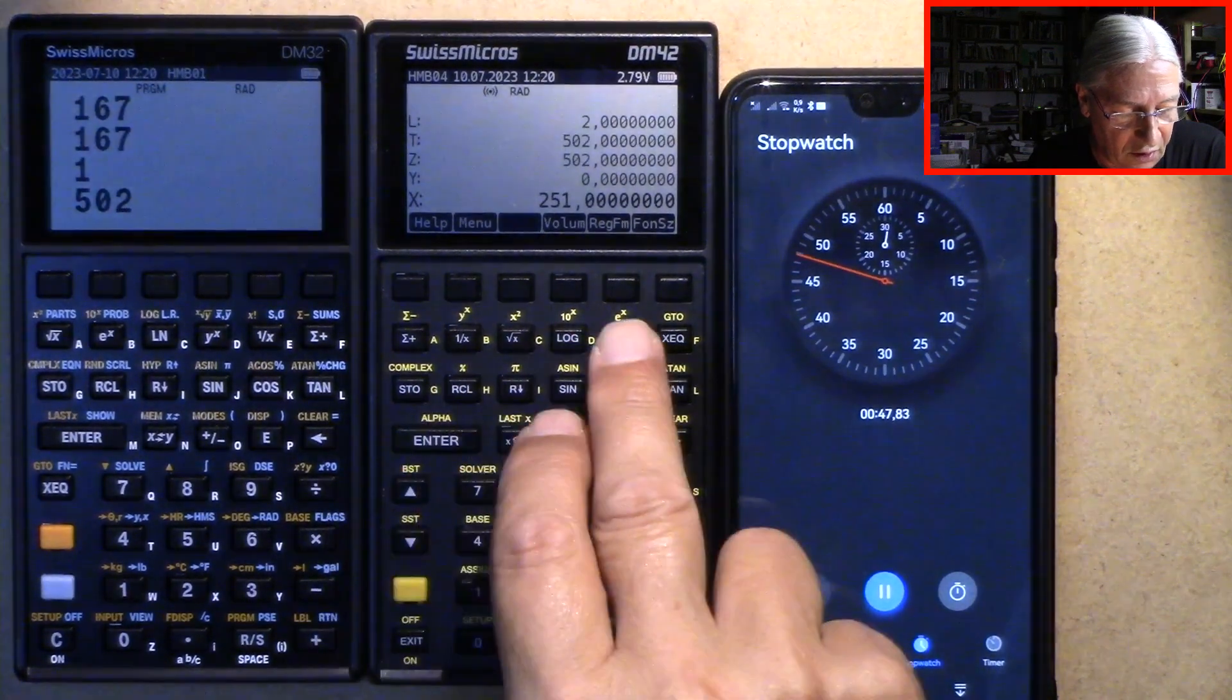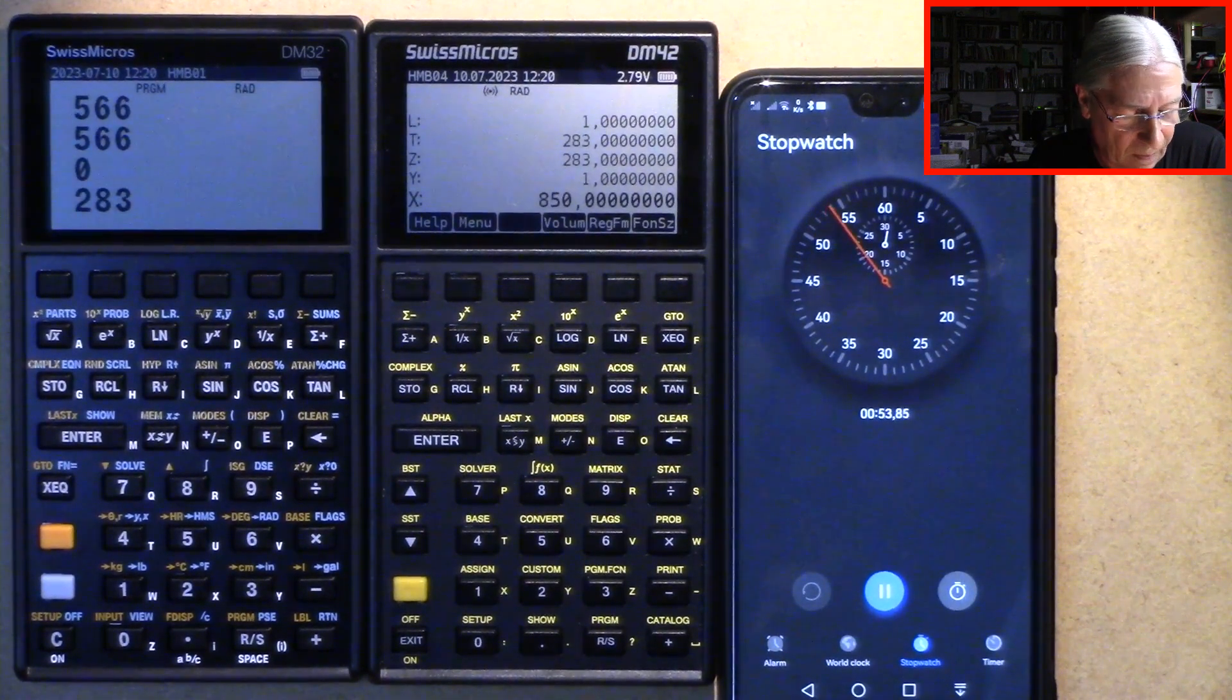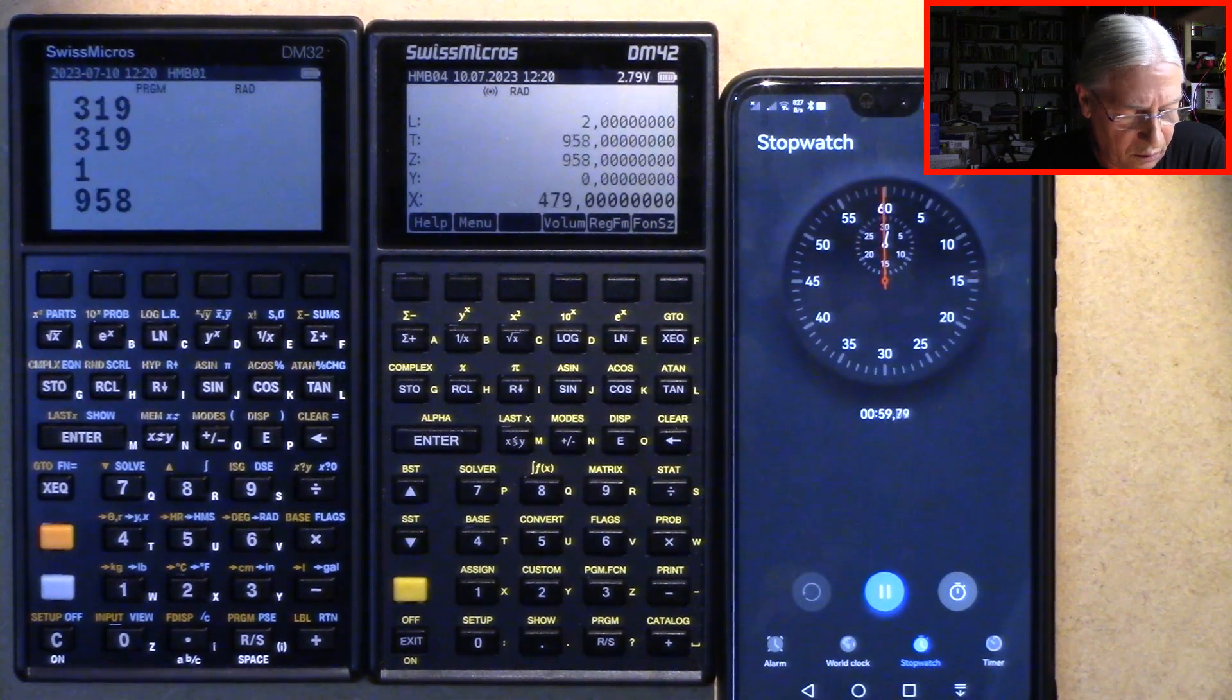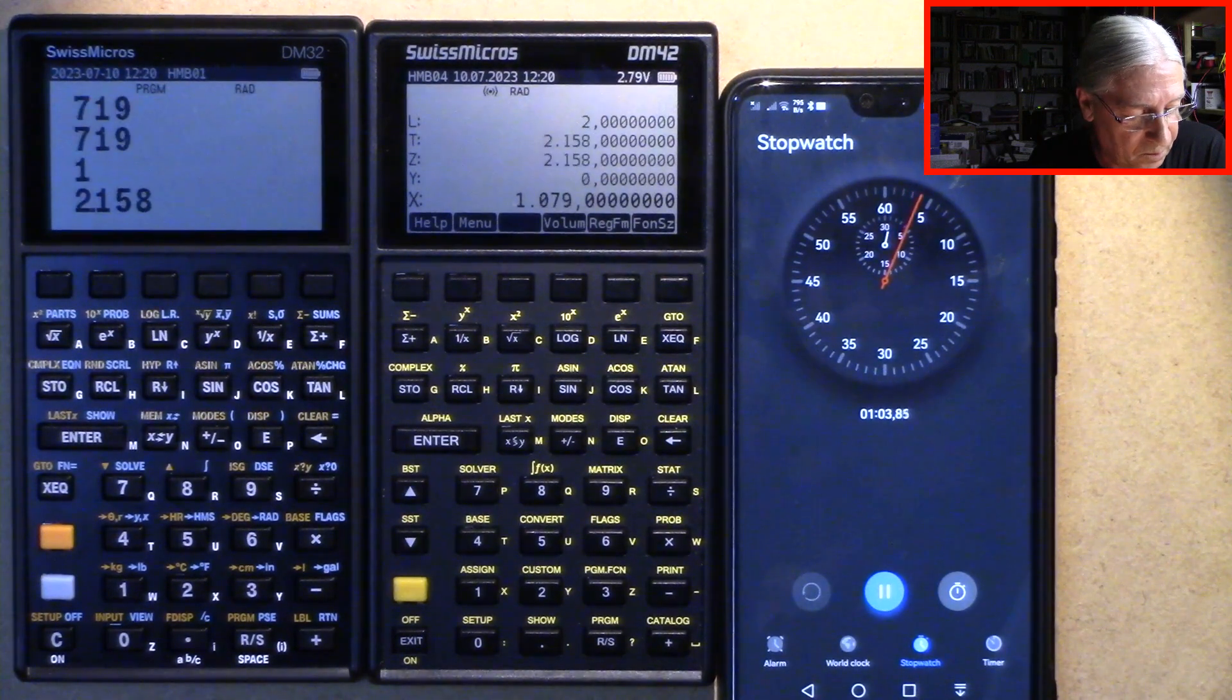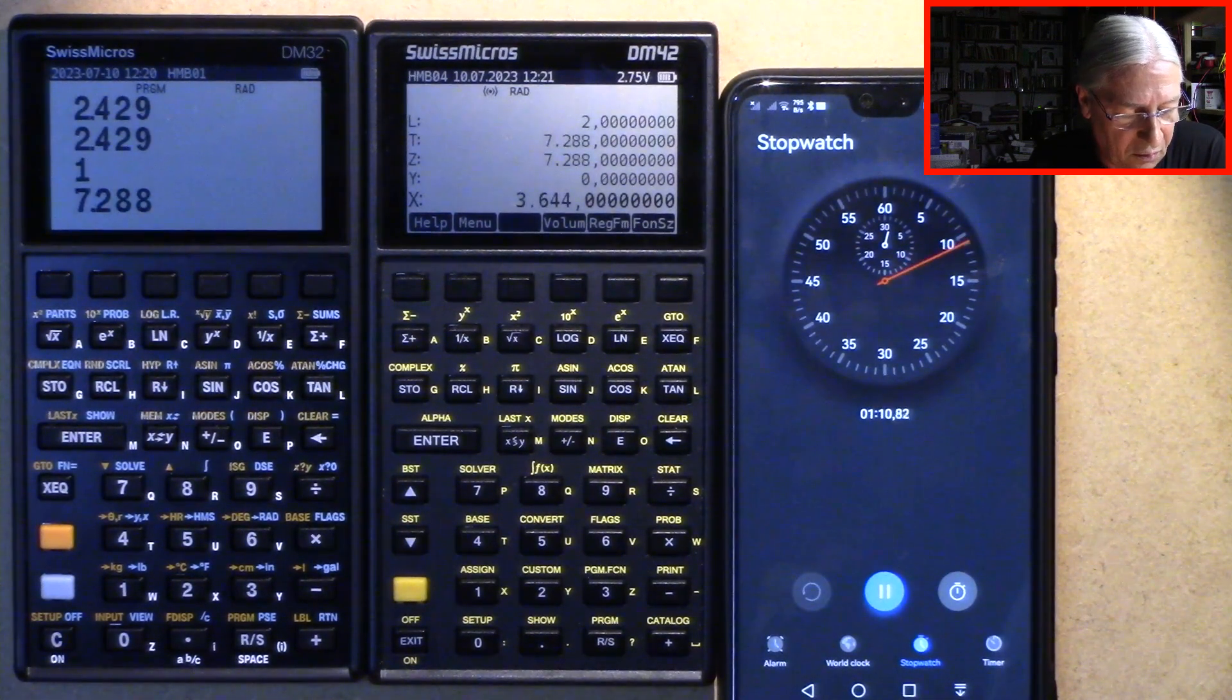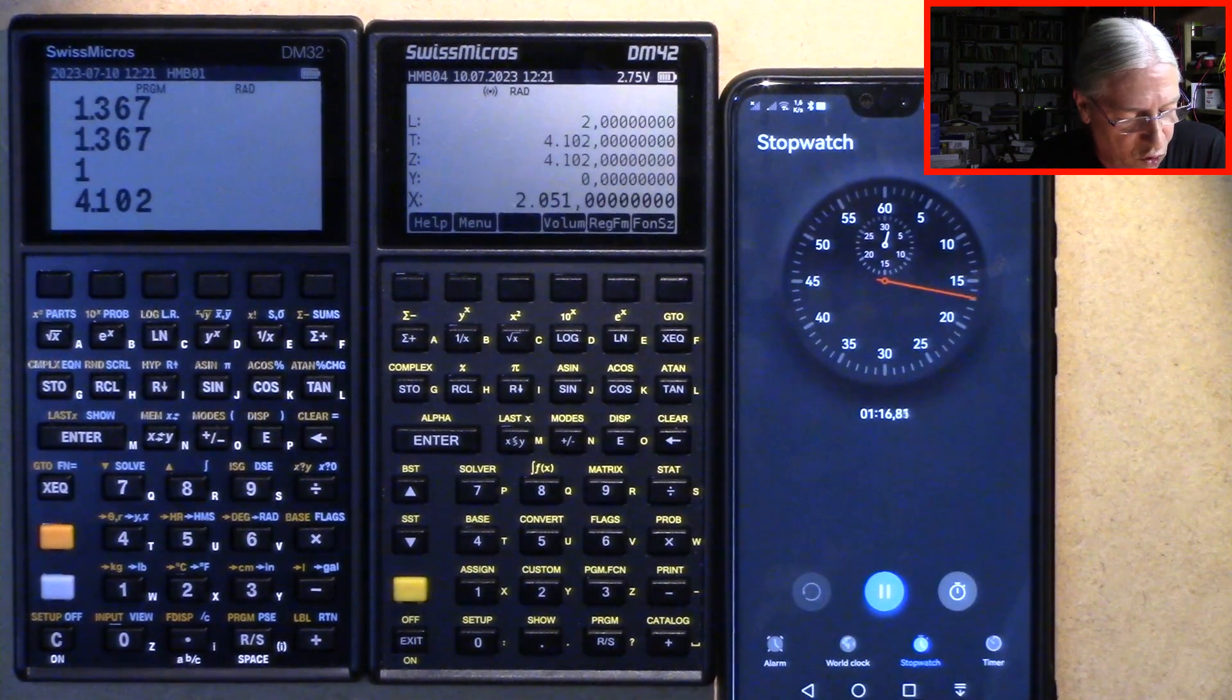But we see that the DM42 now has a bit of an advantage, about one second ahead at the moment. Although the difference isn't that big, it's just a fraction of it I'd say at the moment.